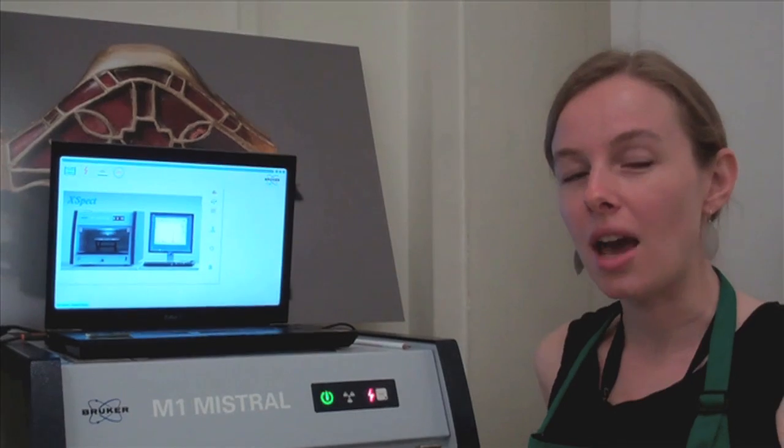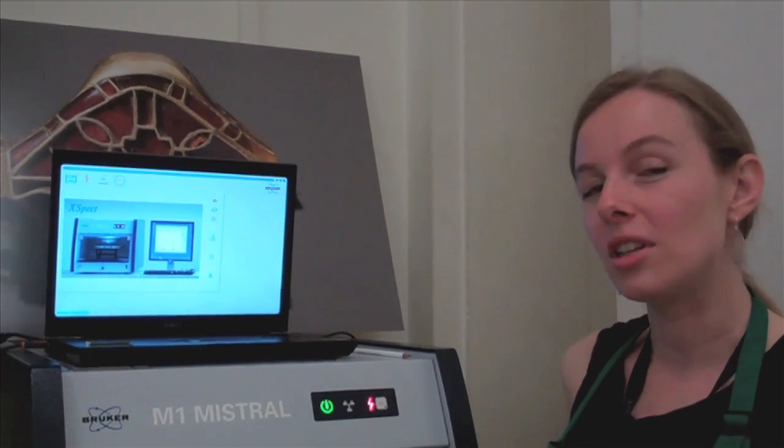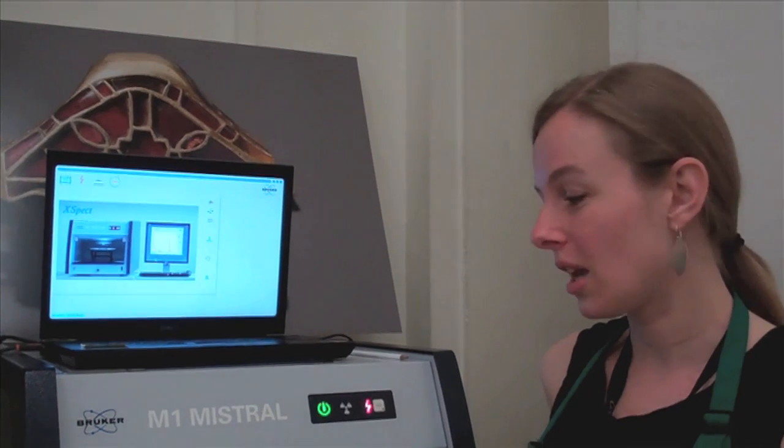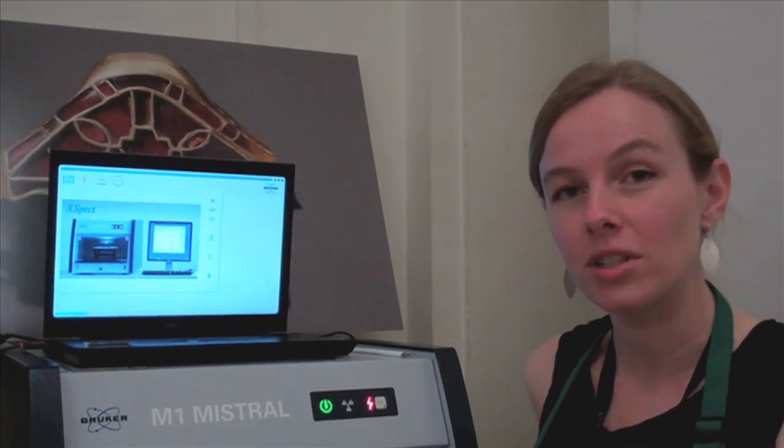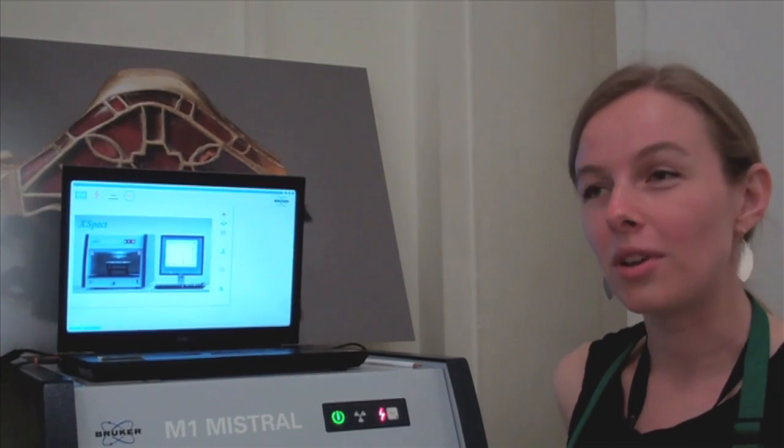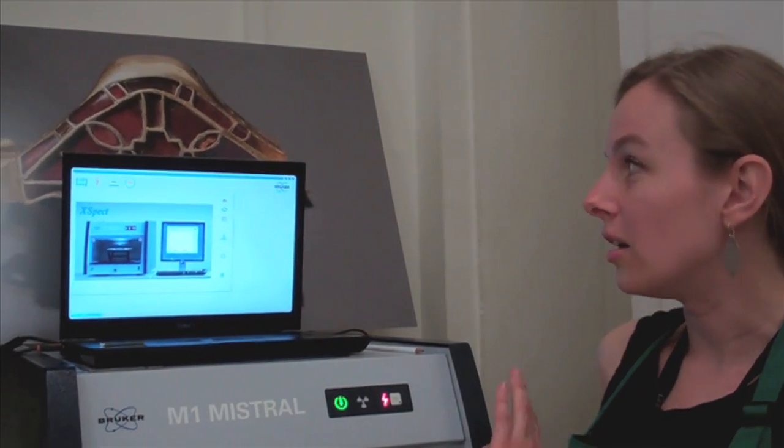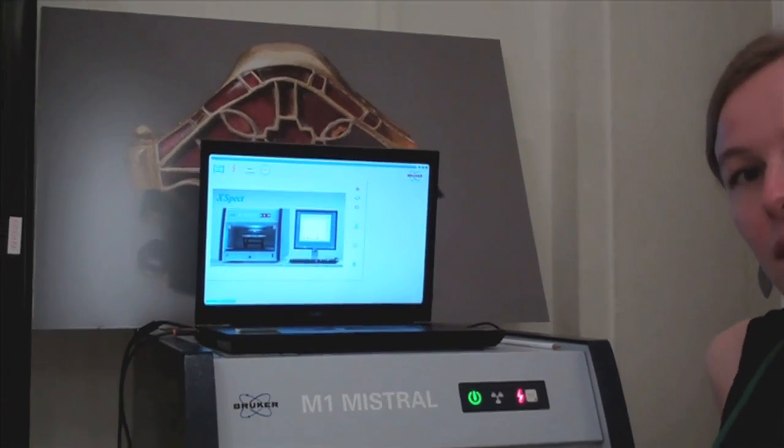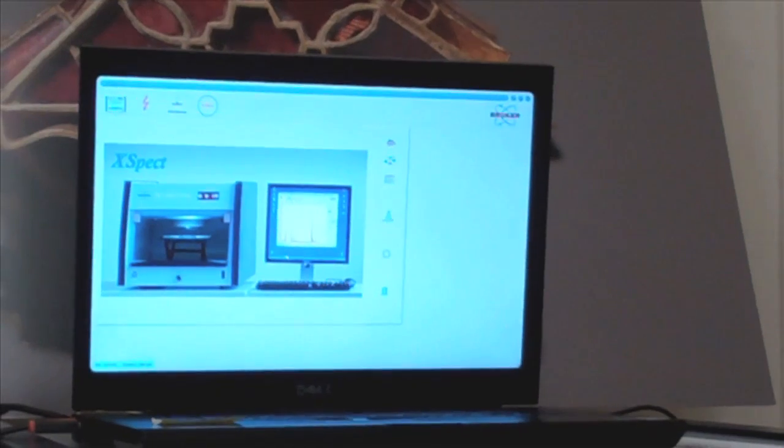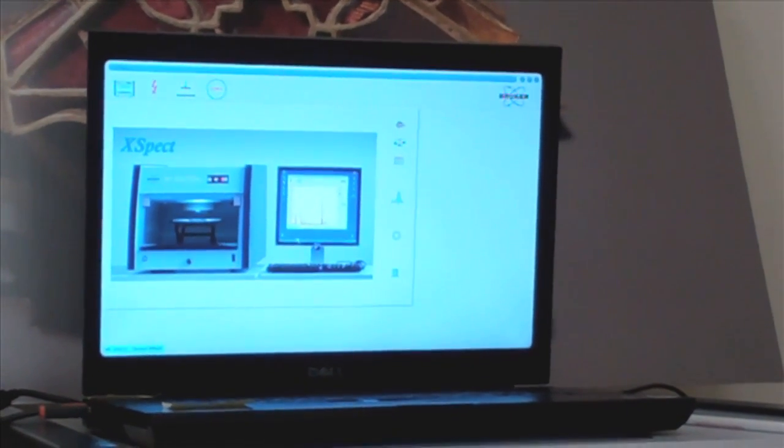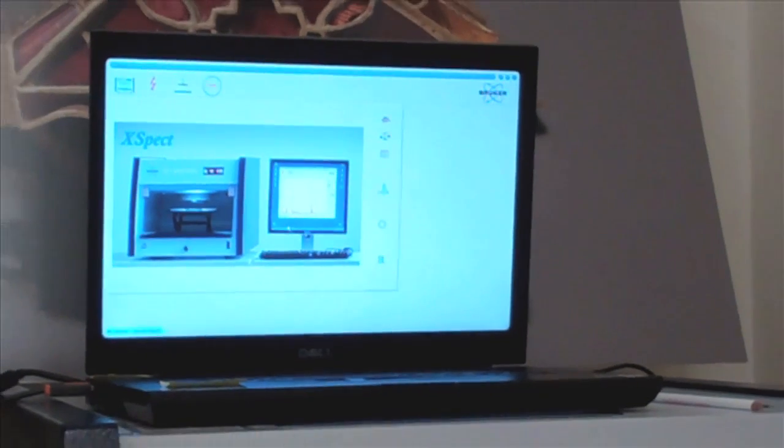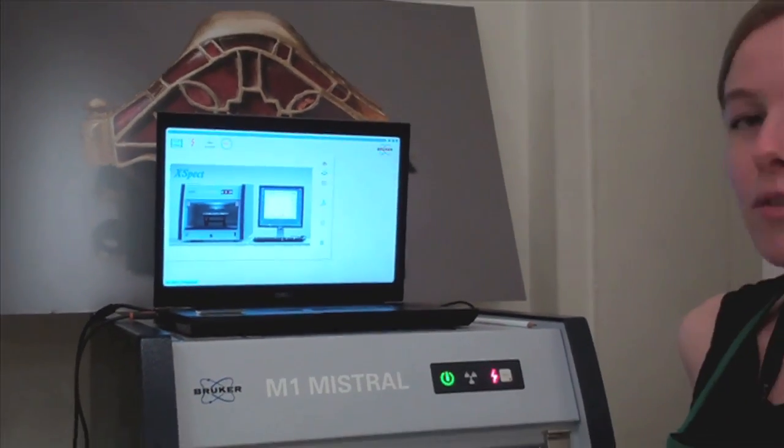So the first step when we use this machine is to do a calibration for the machine of a known standard. So in this case we use a silver calibration, which is a known percentage of silver, and this is used to calibrate the compositional analysis software which allows us to then determine what percentages of different elements are in whatever objects we're testing. So it improves the accuracy and precision of what we are measuring.